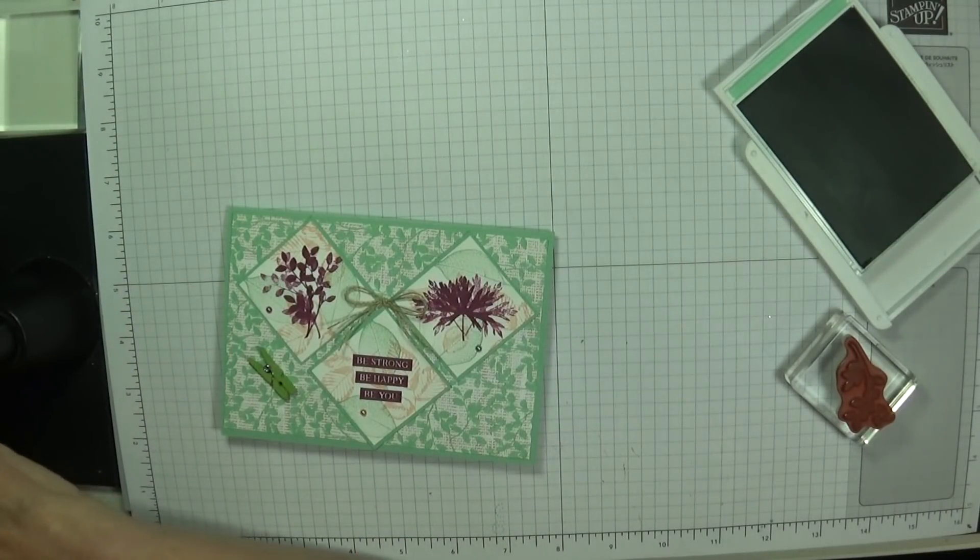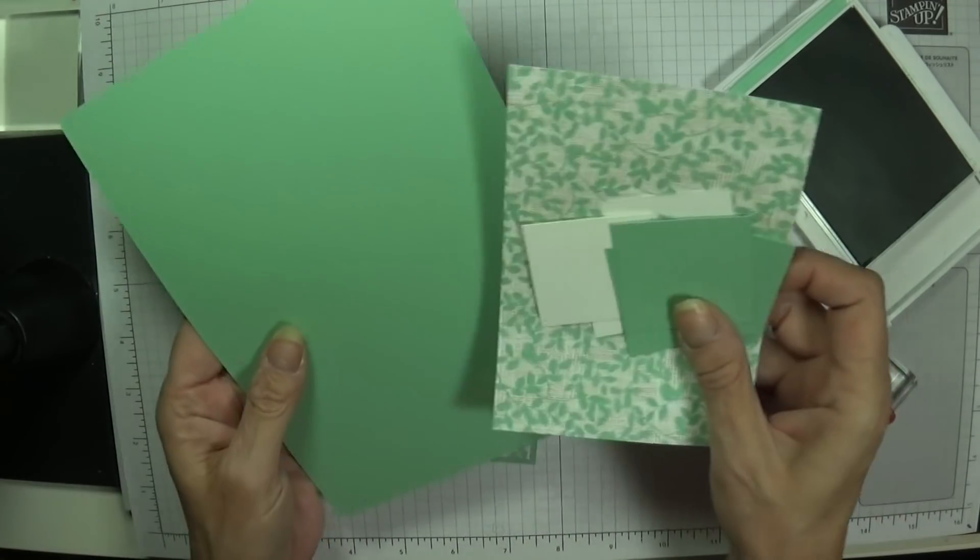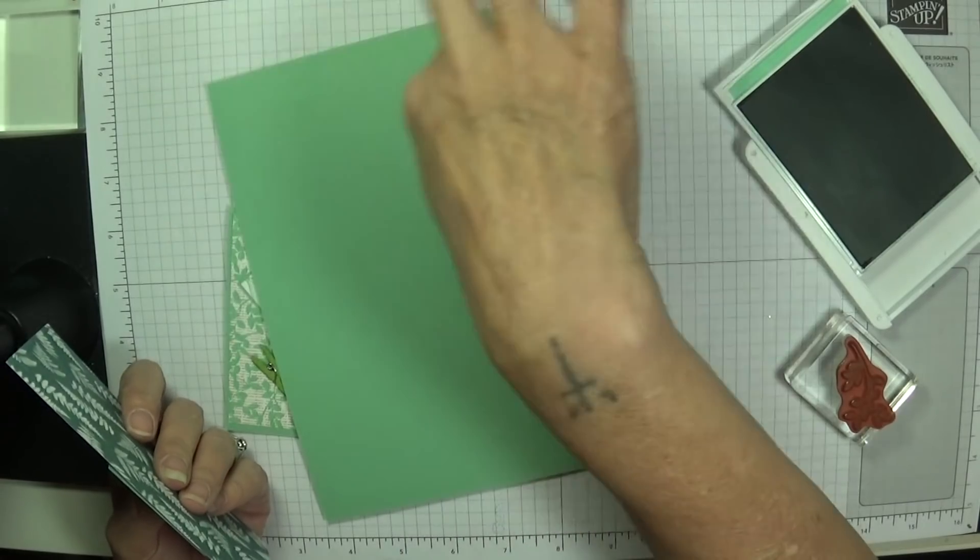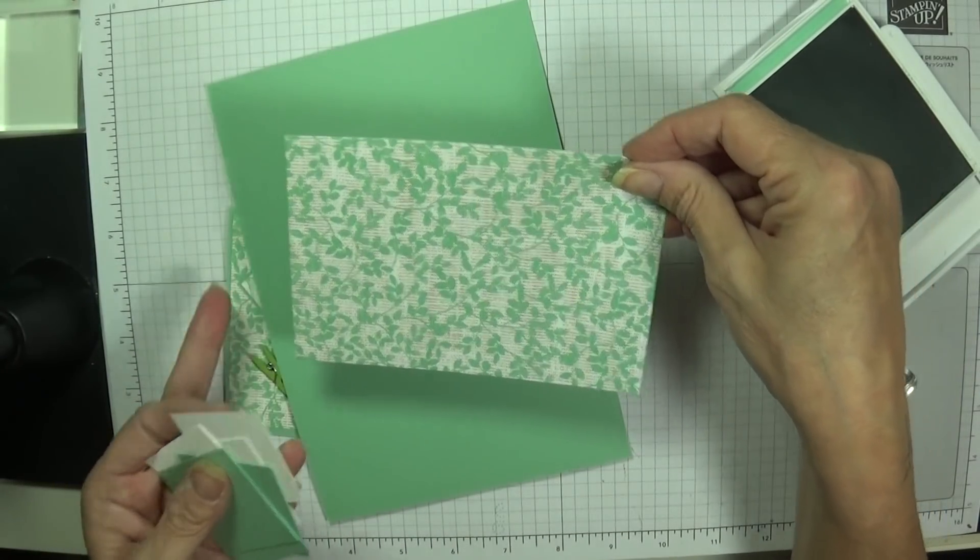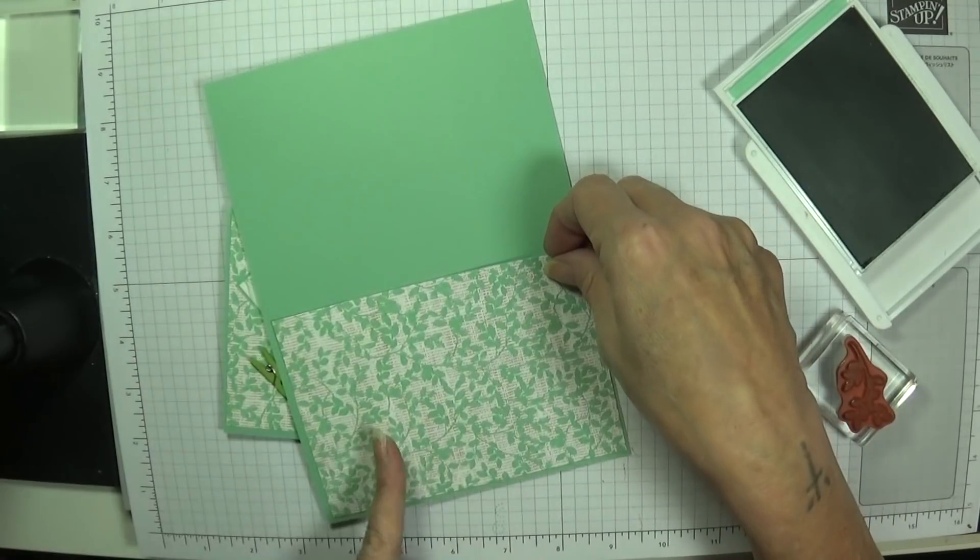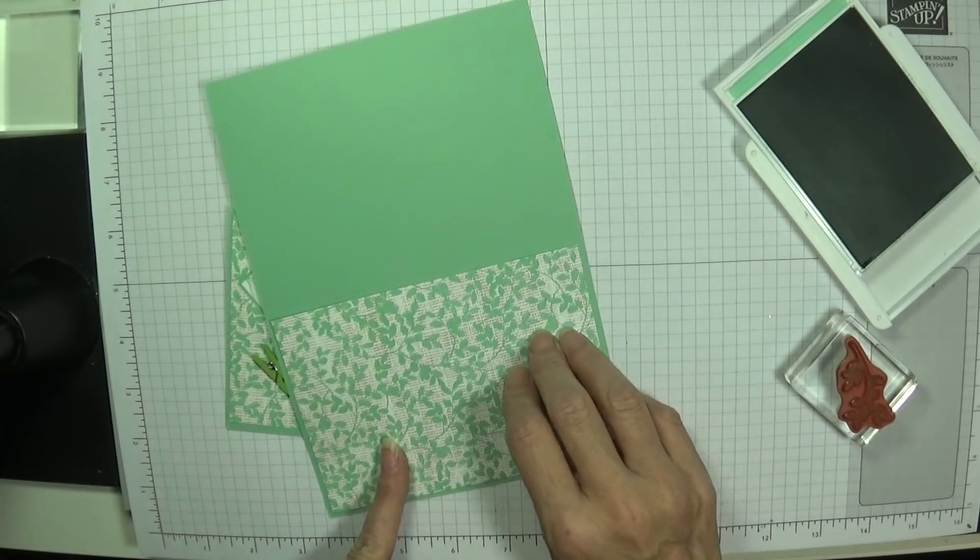So let me grab my pieces. For this one, we've got our card which is 8 and a quarter by 5 and seven eighths, so you'll score and fold it in half. Our designer series paper, which is 3 and seven eighths by 5 and five eighths.